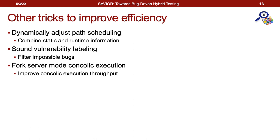Xavier also adopts advanced scheduling by combining static information with runtime statistics. For example, although an input can reach more instrumentations as calculated at compile time, if during runtime the solver has determined that 99% of those instrumentations are not satisfiable, we will deprioritize that input in the future. Other interesting techniques include sound vulnerability labeling to filter impossible bugs at compile time, and a fork server mode for concolic execution to accelerate execution during runtime. Please check our paper for more details.